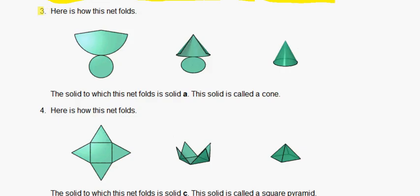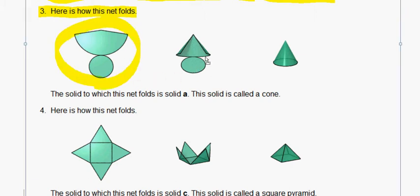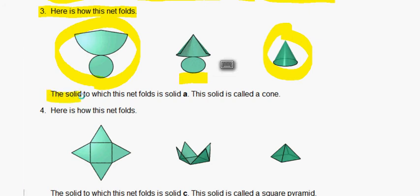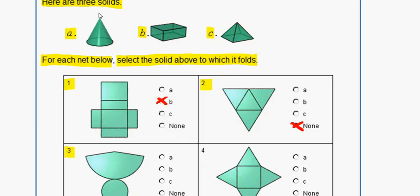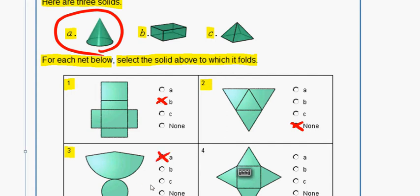Now let's move on to question 3. Here is how this net folds: it starts off like this, the sides come around, the bottom stays the same, and we get this figure. The solid to which this net folds is solid A, called a cone. We can see figure A is what our figure looks like.